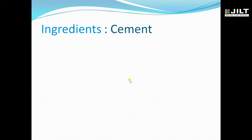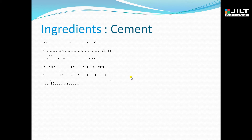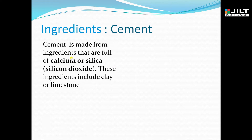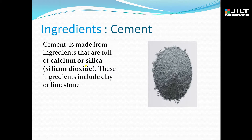Now, what are the ingredients available in concrete? Basically the ingredients of concrete include cement. Cement is made from ingredients that are full of calcium or silica, which can be taken as silicon dioxide. These ingredients include clay or limestone. You can view the image available of the cement.